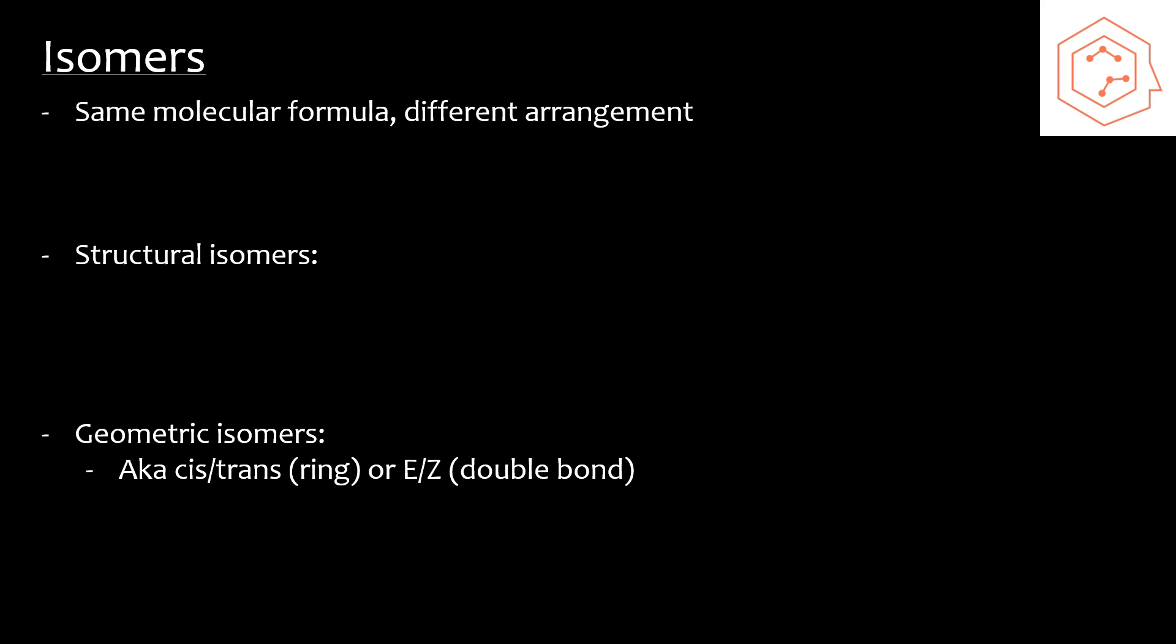Isomers are compounds that share the same molecular formula, but they have different bonding patterns and atomic organization. The molecules will have the same types and numbers of elements, but the manner in which they are arranged will differ. Let's take, for example, butane versus isobutane. They have the same molecular formula, but what differs is the overall arrangement.